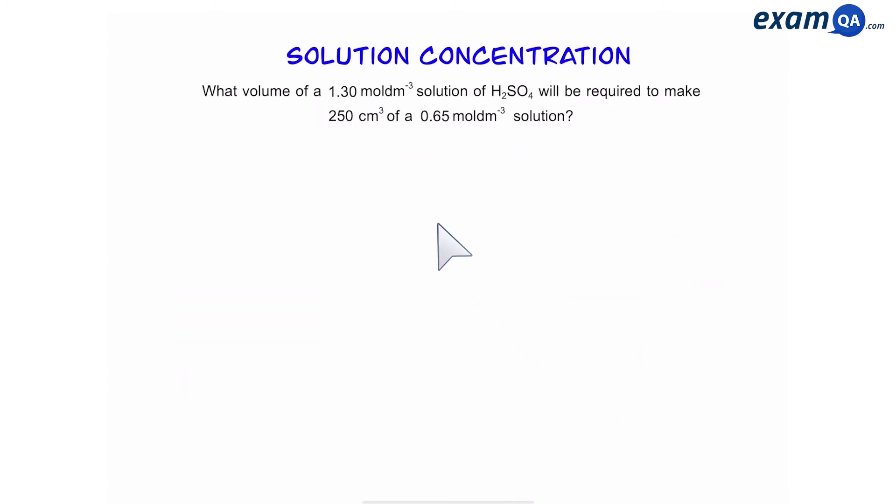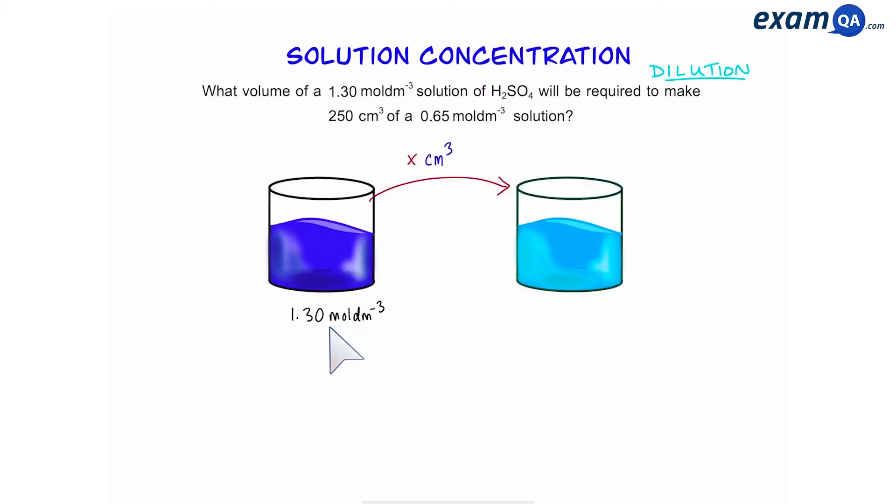Okay, pause the video and read this question. This is a style of dilution question. So we have a solution of 1.3 moles per dm cubed. We're going to transfer a certain volume from that solution into a beaker and then mix it with water to produce a 0.65 molar solution with a volume of 250 centimeters cubed.